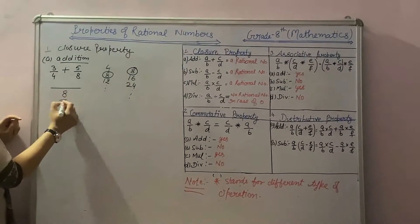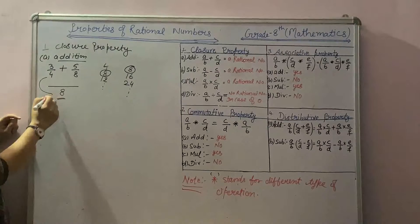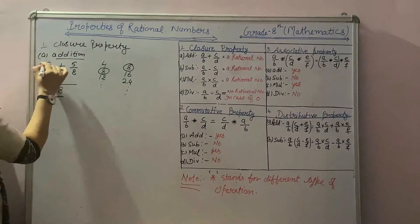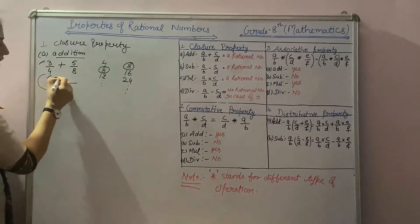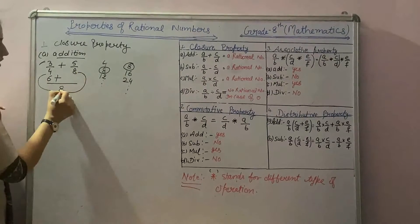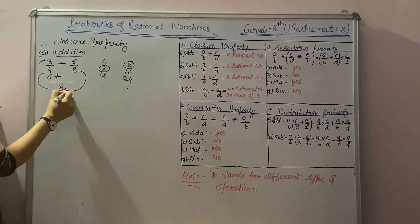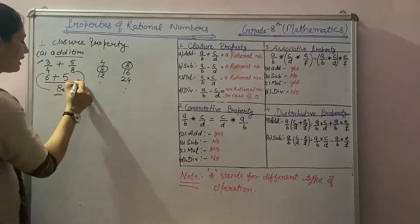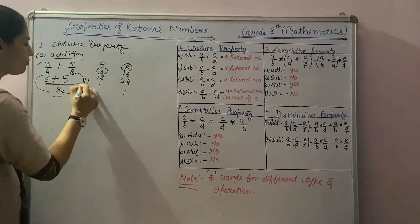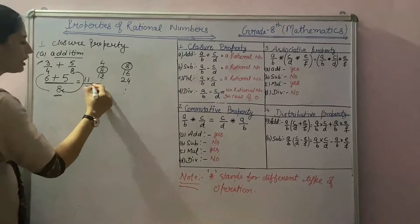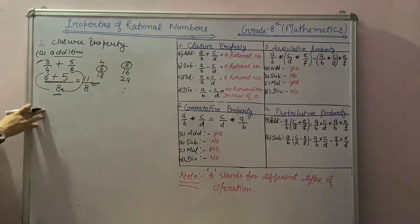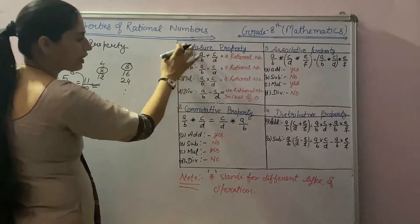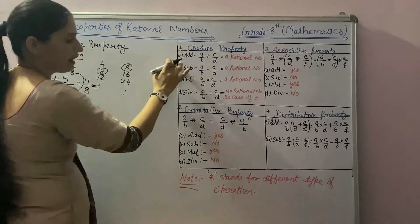Now we divide 8 by 4, we get 2, and multiply 2 with numerator 3, we get 6. In the same way, 8 divided by 8, we get 1, and 1 multiplied with 5, we get 5. Adding them gives 11 by 8, which is also a rational number. This implies rational numbers are closed under addition.